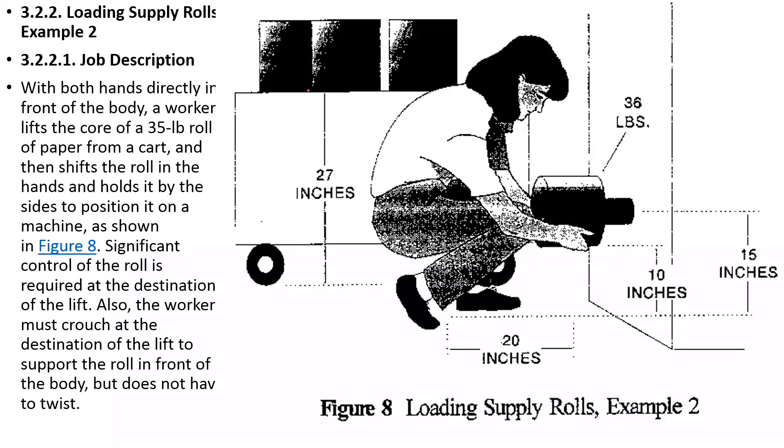In this example, this female person has a roller that is 36 pounds heavy sitting on a cart. It's from the floor at 27 inches. So it's sitting on a 27-inch cart, and then she is lowering it at a distance of 10 inches. This is where she has to place this roller.